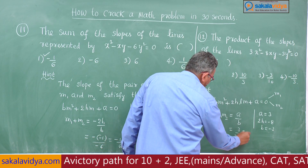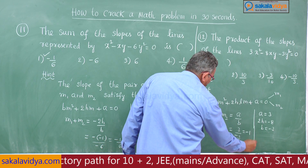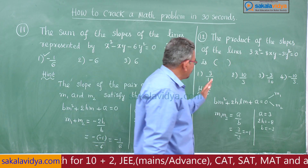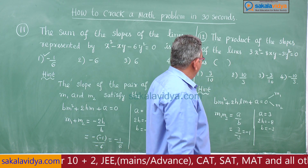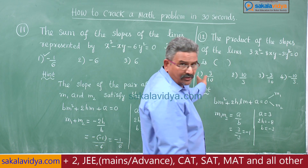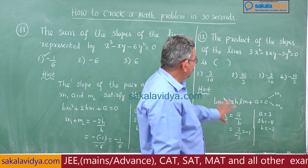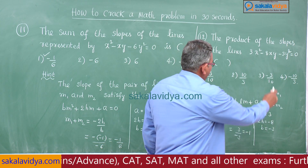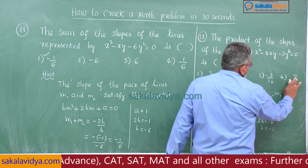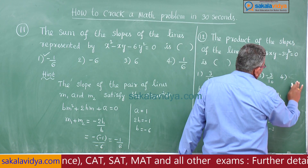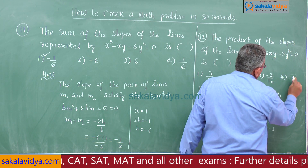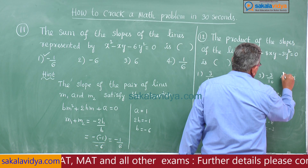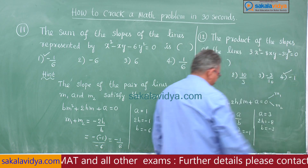We get a/b = 3/(-3) = -1. The given options don't include -1 correctly, so the options need to be revised — taking the fourth option as -1, that is the right answer.